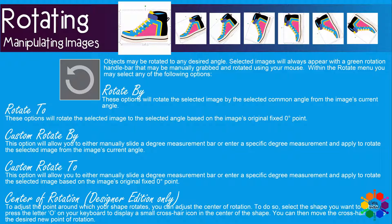Center of Rotation — this is for Design Edition or higher only. To adjust the point around which your shape rotates, you can adjust the center of your rotation. To do so, select the shape you want to rotate and press the letter O on your keyboard to display a small crosshair icon in the center of your shape. You can then move your crosshair icon to the desired new point of rotation.